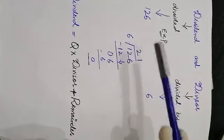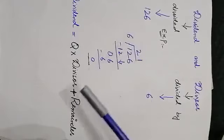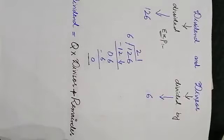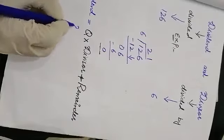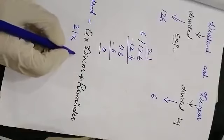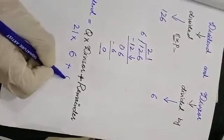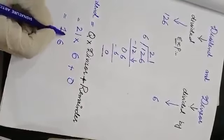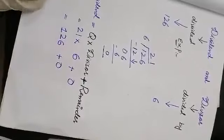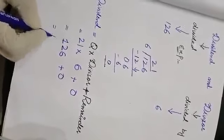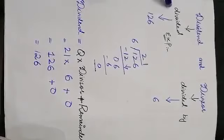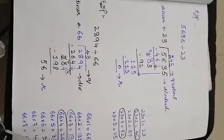The formula is: quotient × divisor + remainder = dividend. Let me show you: the quotient is 21, multiplied by the divisor 6, plus remainder 0. 6 ones are 6 and 6 twos are 12, plus 0 gives us 126. So 126 is the dividend. This example is solved.